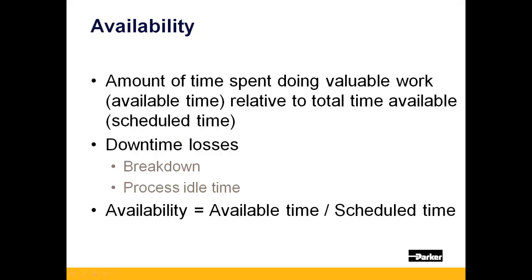Availability is the ratio between the theoretical available time relative to the scheduled time to operate, often called uptime. A reduction in available time indicates a downtime loss. Downtime losses can be attributed to a breakdown or can come from process idle time while an operator waits for parts or takes longer than normal to set up the machine.